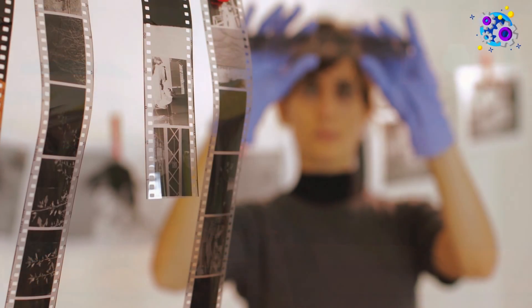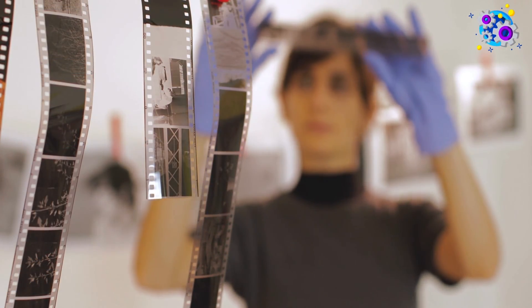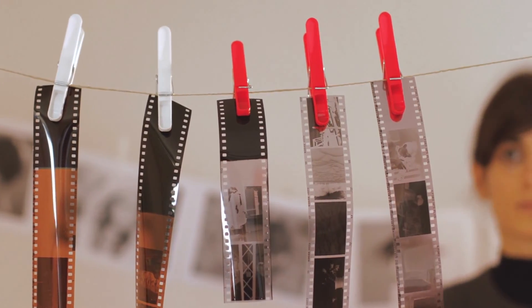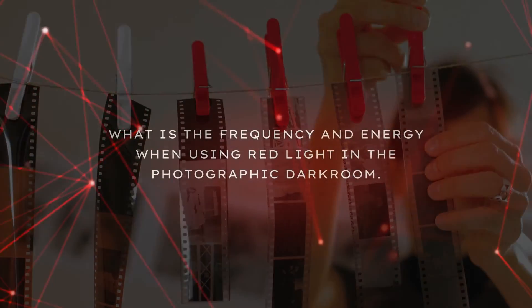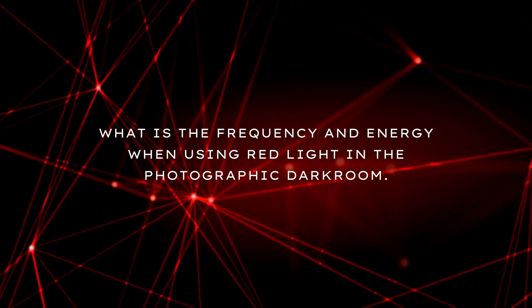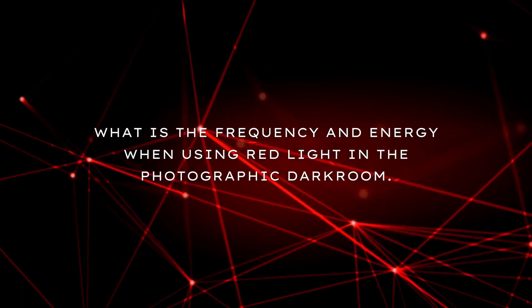In this video, we are going to explore why photographers use red light in the dark room and what the red light in a dark room is typically called. We will also discuss why red light can be used in photographic dark rooms but blue or white light cannot. We will even further analyze the frequency and energy when using red light in the photographic dark room.